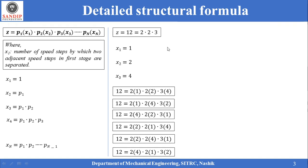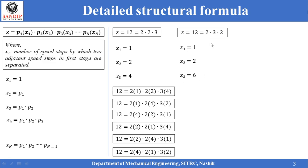To achieve 12 speeds, there is one more structural formula: 12 = 2 × 3 × 2, meaning 2 speed steps in the first stage, 3 speed steps in the second stage, and 2 speed steps in the third stage. For this formula, x1 = 1, x2 = p1 = 2, and x3 = p1 × p2 = 2 × 3 = 6. So the detailed structural formula becomes 12 = 2(1) × 3(2) × 2(6). By changing the positions of 1, 2, and 6 while keeping 2, 3, and 2 fixed, 6 combinations can be obtained.